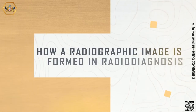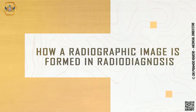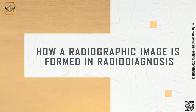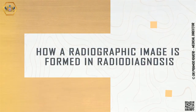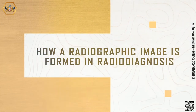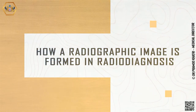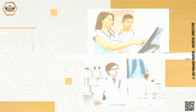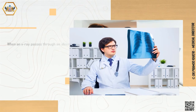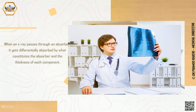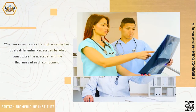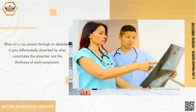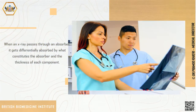Welcome to British Biomedicine Institute. Today we will explore how a radiographic image is formed in radio diagnosis. When an X-ray passes through an absorber, it gets differentially absorbed by what constitutes the absorber and the thickness of each component.